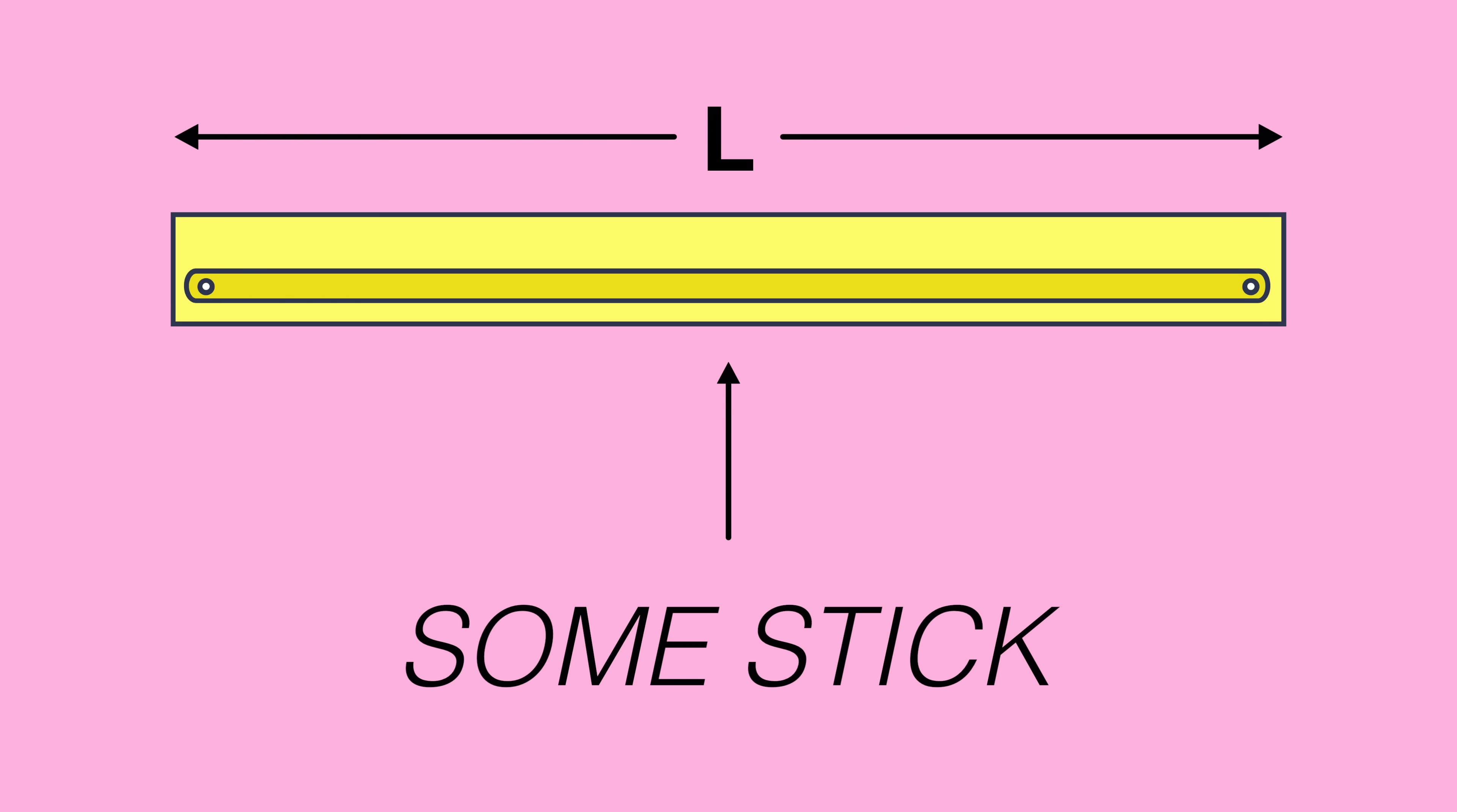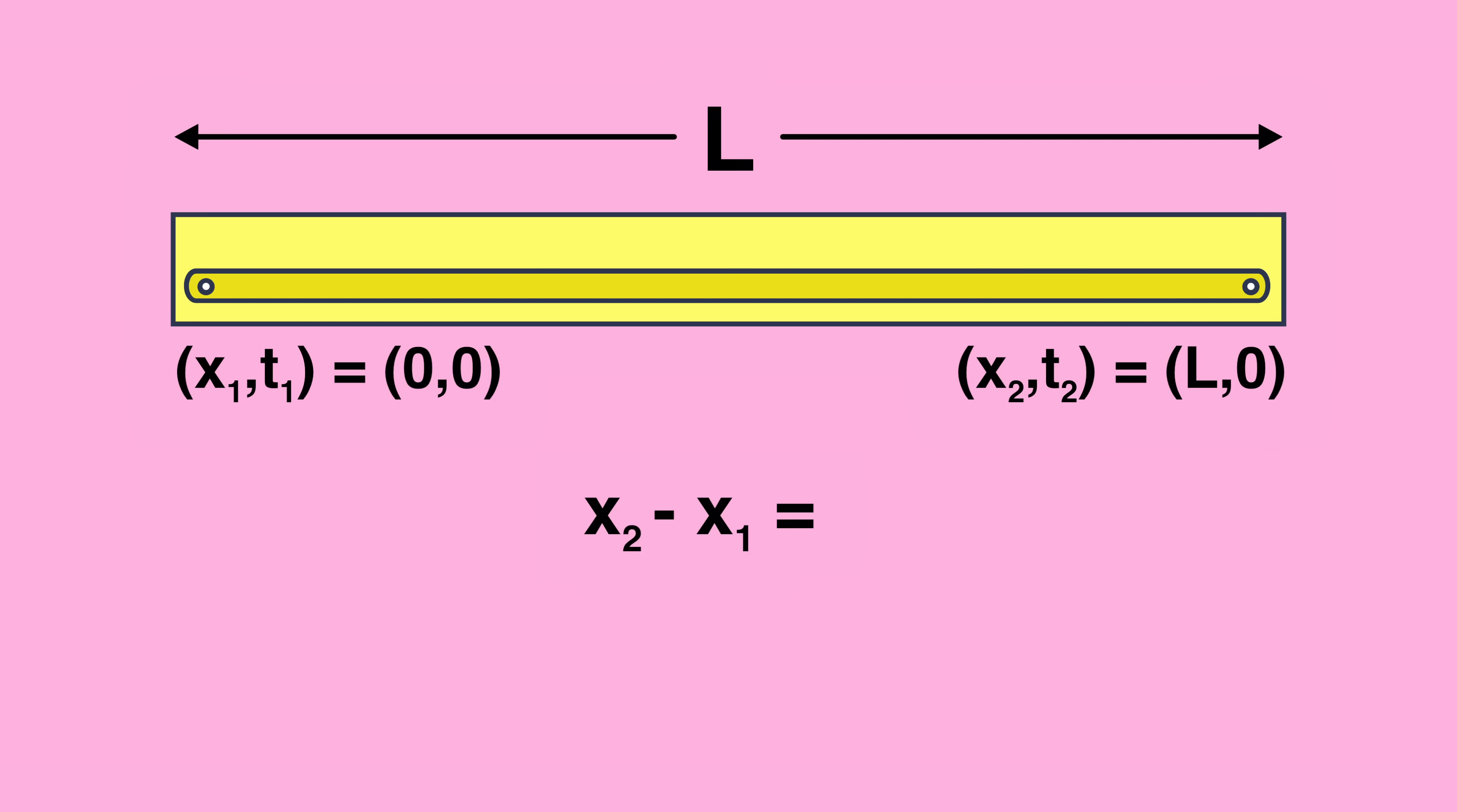Let's say that the unprimed observer, which I remind you is the one who sees that the stick not moving, decides to do the measurement at the time equals zero. Suppose further that she puts one end of the stick at location zero. Then, rather obviously, the other end of the stick is at location equals L. Putting this in terms of x's and t's, we would say x1 t1 equals zero zero, and x2 t2 equals L zero.